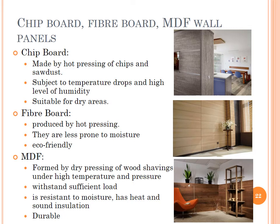Chipboard is made by hot pressing of chips and sawdust. It is subjected to temperature drops and high levels of humidity, so it is mainly suitable for dry areas. Fiberboard is produced by hot pressing; it is less prone to moisture and is eco-friendly. MDF is formed by dry pressing of wood shavings under high temperature and pressure and can withstand sufficient load. It is resistant to moisture and has heat and sound insulation.